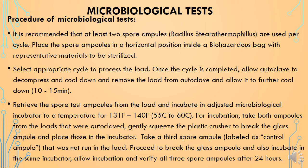Once the cycle is completed, allow the autoclave to decompress and cool down, then remove the load and allow it to further cool down for 10 to 15 minutes. Retrieve the spore test ampoules from the load and incubate in a microbiological incubator at 131–140°F (55–60°C). Take both autoclaved ampoules, gently squeeze the plastic crusher to break the glass ampoules, and place them in the incubator. Take a third spore ampoule labeled as the control ampoule — which was not placed in the autoclave — break the glass ampoule, and also incubate it in the same incubator. Allow incubation and verify all three spore ampoules after 24 hours.